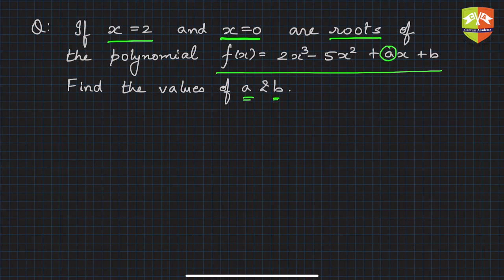Here a and b are unknowns. What is given? x equals 2 and x equals 0 are the roots, so it becomes much easier to solve. Why? Because by definition, if something is a root or a zero of a polynomial, then if you substitute the variable in the polynomial by that value, the polynomial itself will reduce to 0.